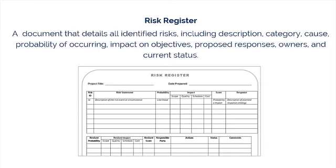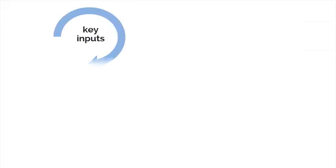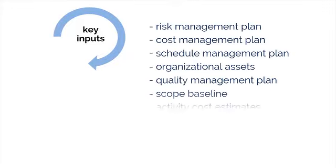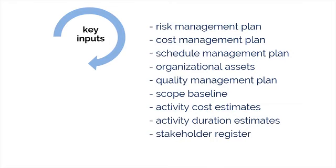The preparation of the risk register begins in this Identify Risks process, and then it becomes available to other project management and risk management processes. Essentially, we are continuing to add information to the register each time we go through one of the processes in risk management. The inputs for the Identify Risks process are numerous, as you can see here, and to be sure, you have seen some of these inputs before.